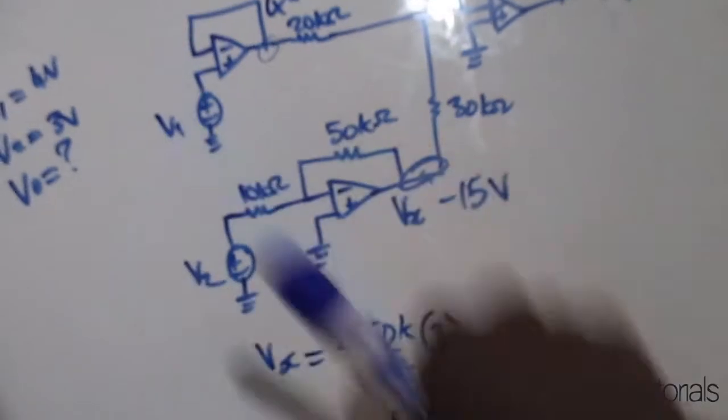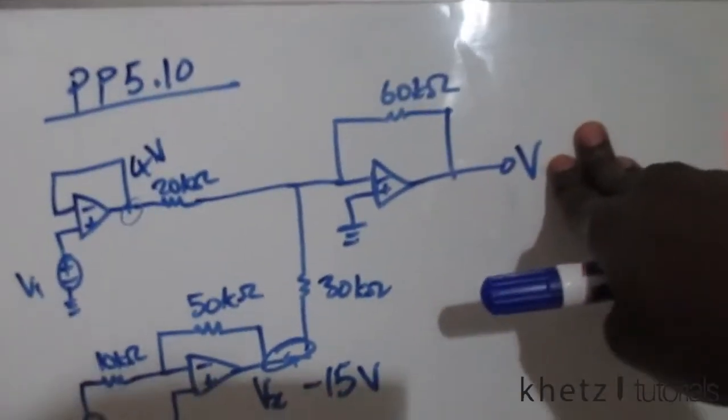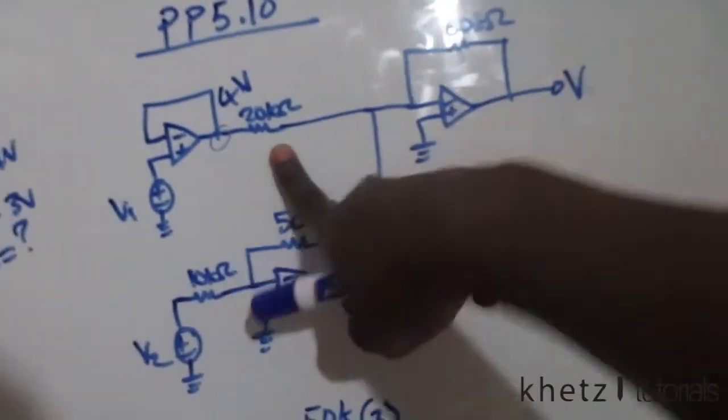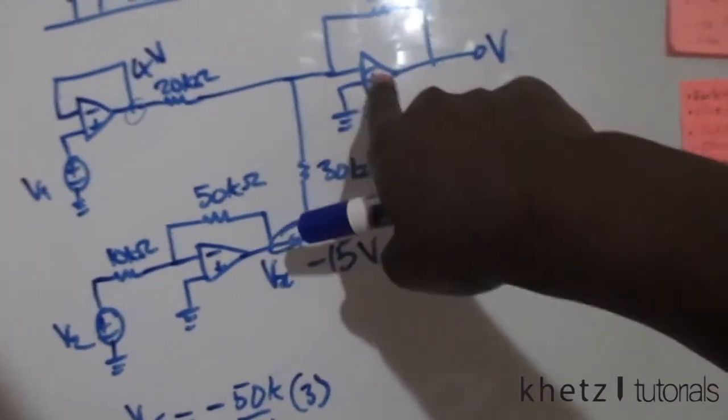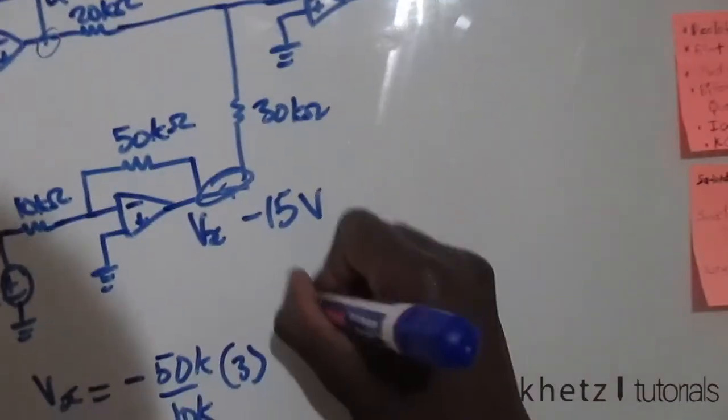And now on this side you can see that this qualifies as a summing amplifier. We have an input, a resistor along the path, we have an input, a resistor along the path adding up to the negative terminal of this op amp. Therefore using the formula for a summing amplifier VO